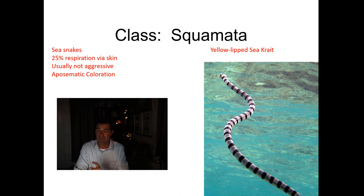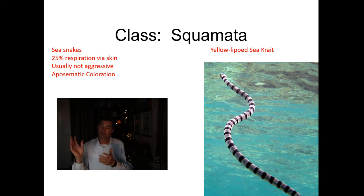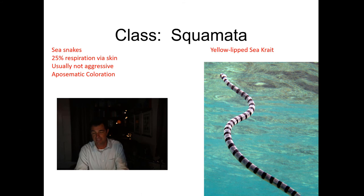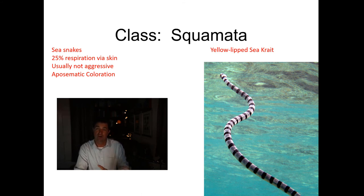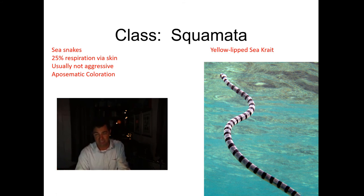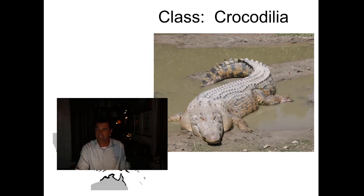Sea snakes have what's called aposematic coloration. You'll often see animals that are brightly colored — black and yellow, black and white, very high contrast. That is a signal to other animals that the animal is venomous. So the opposite of blending in and hiding is aposematic coloration, and that's what you see in the sea snakes.